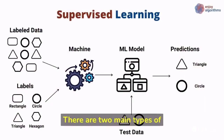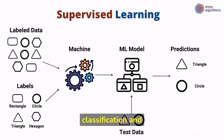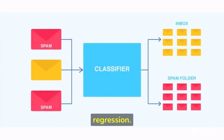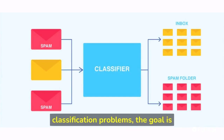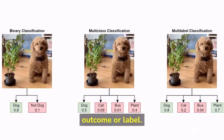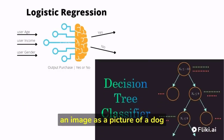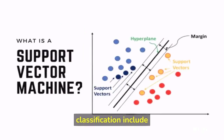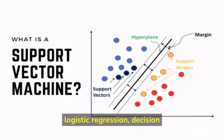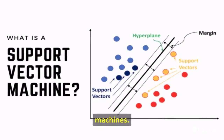There are two main types of problems that can be solved using supervised machine learning: classification and regression. In classification problems, the goal is to predict a categorical outcome or label. For example, classifying an email as spam or not spam, or classifying an image as a picture of a dog or a cat. Common algorithms used for classification include logistic regression, decision trees, and support vector machines.